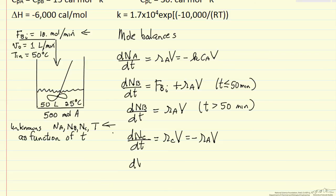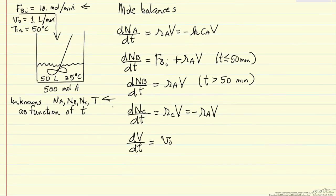The final equation, not a mole balance but related, is the change in the volume of the reactor. We're adding one liter per minute, that's V0, so the volume is increasing with time. This affects the concentration, it affects the rates of reaction, we have to take that into account.